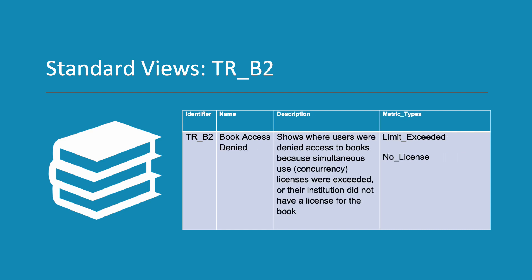TR B2 is the standard view that shows book access denied. This shows where users were denied access to books because simultaneous use – concurrency licenses – were exceeded, or their institution did not have a license for the book. This report uses two metric types – Limit Exceeded and No Licence.